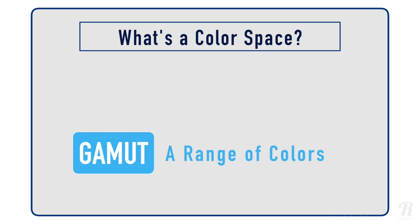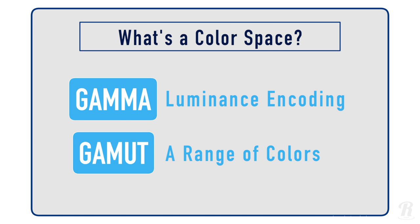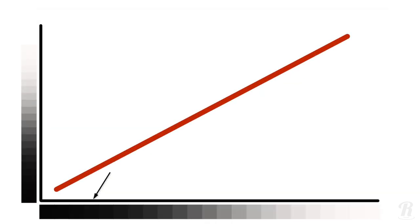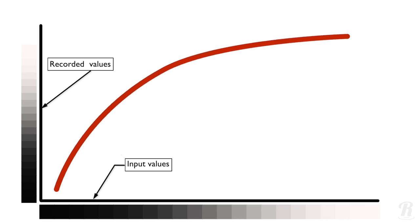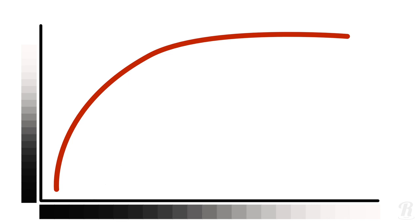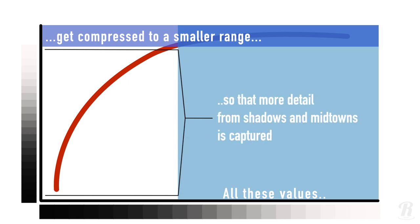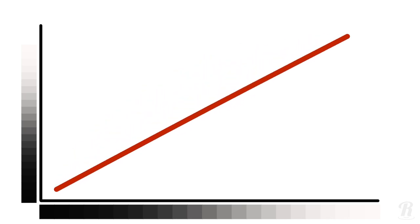So gamut is a range of colors. Gamma, or the gamma curve, defines how the brightness values of an image are encoded when it's recorded. Images are encoded with a gamma curve, in part to reduce the amount of data that's required to store them. The reason this works is that our eyes are much more sensitive to changes in low levels of brightness than high levels of brightness. So recording devices can compress the brightest areas of an image much more than the darkest. This compression results in a curve like this.